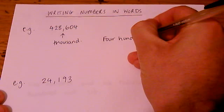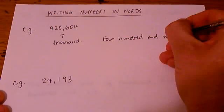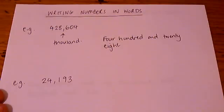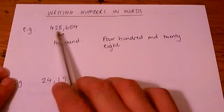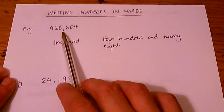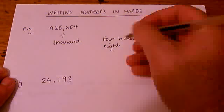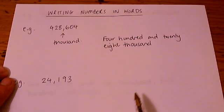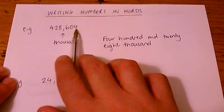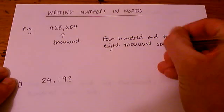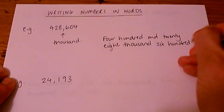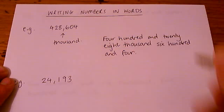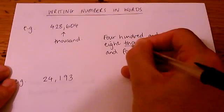So it goes like this, 428. OK, that's the first part. Then I have to insert this word thousand. And then I can just simply add on this number at the end here, 604.